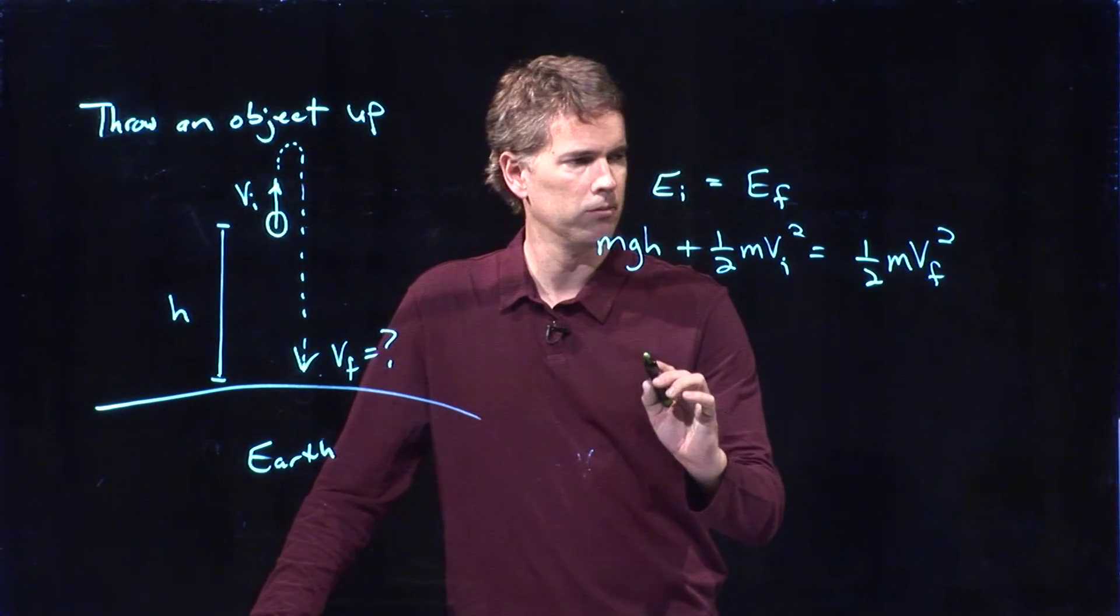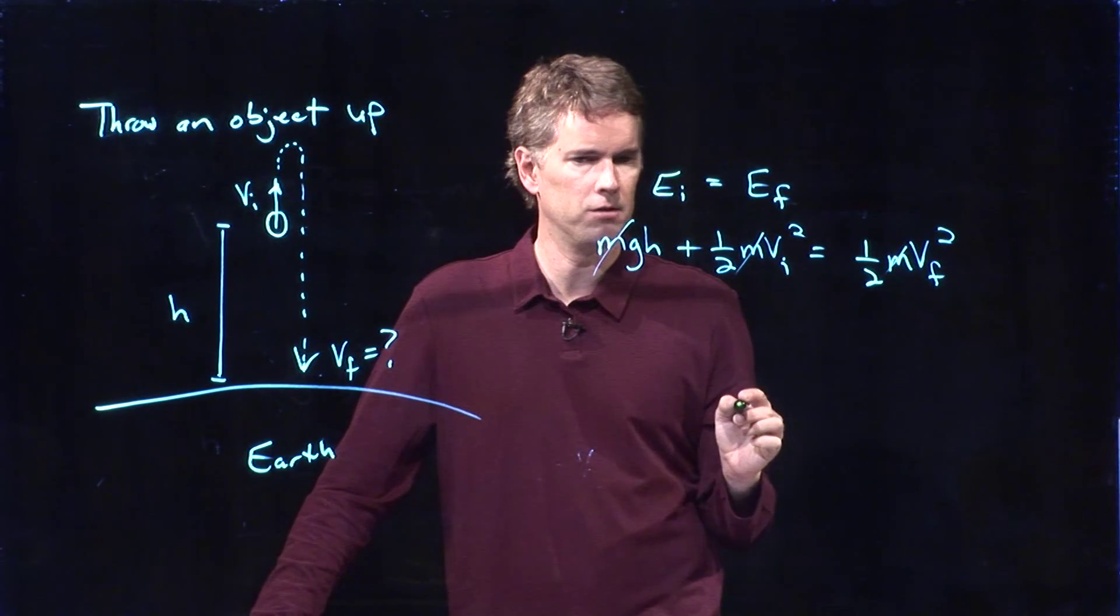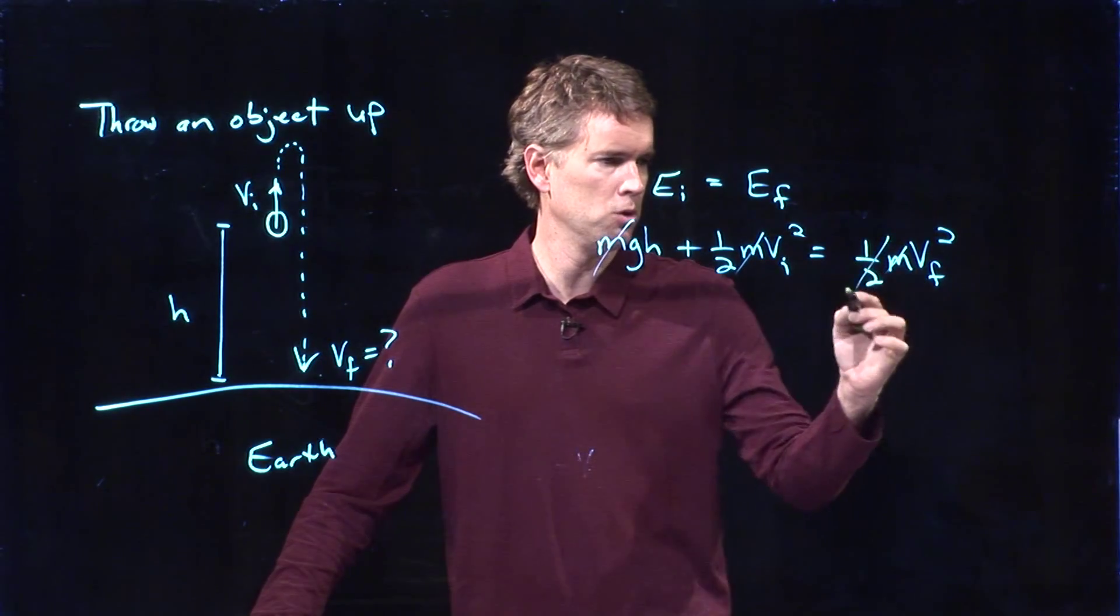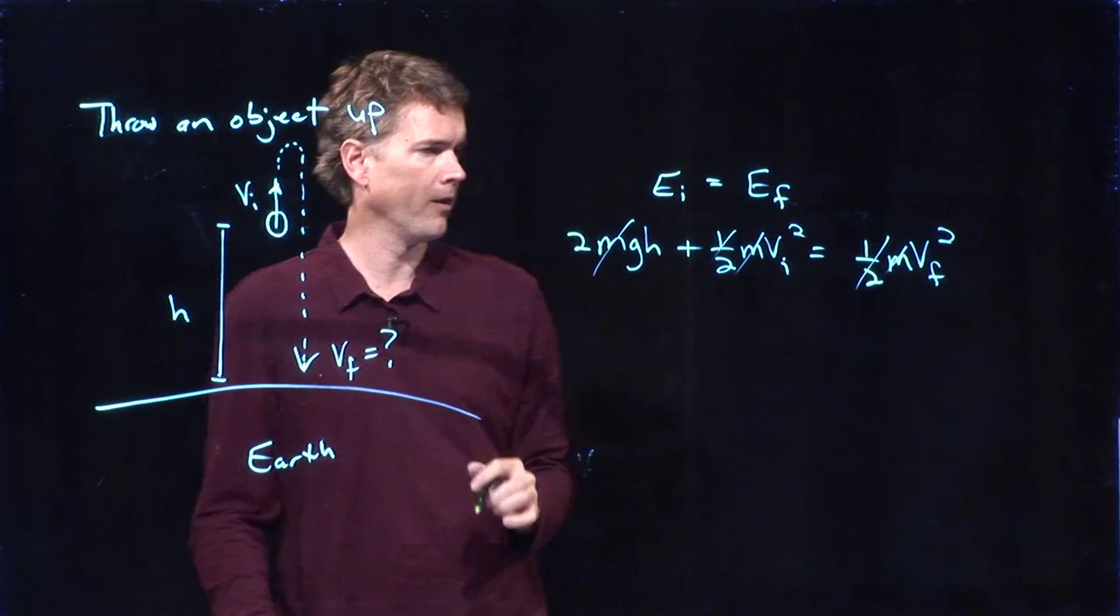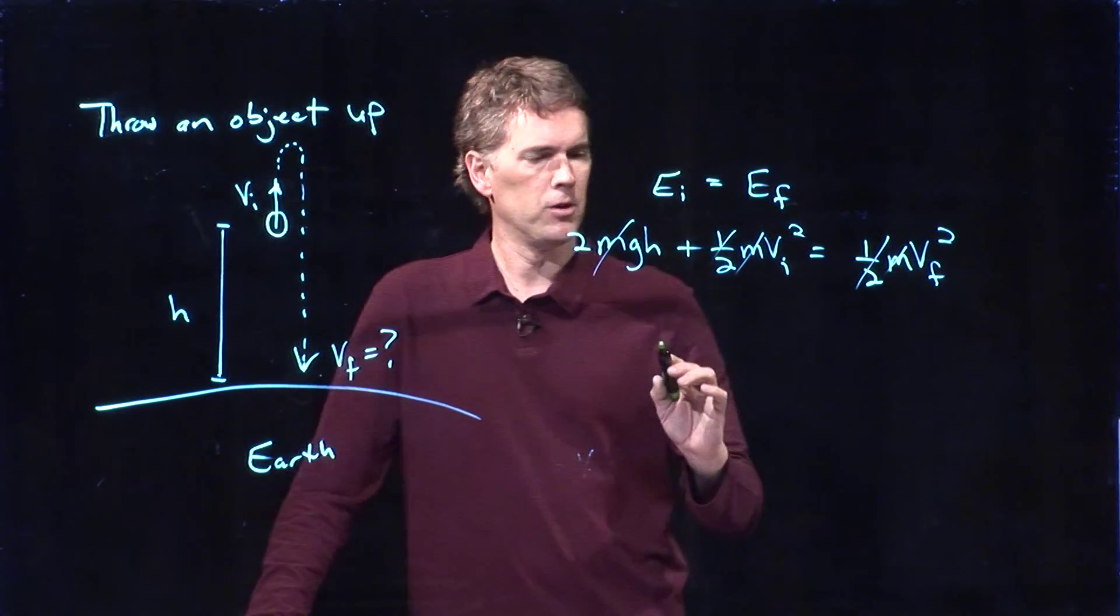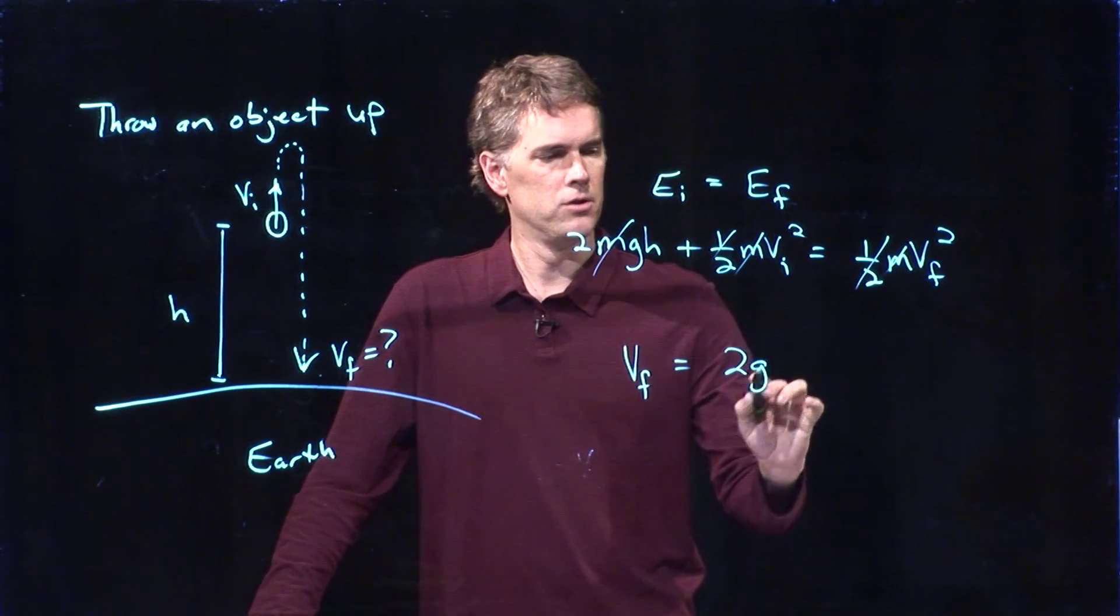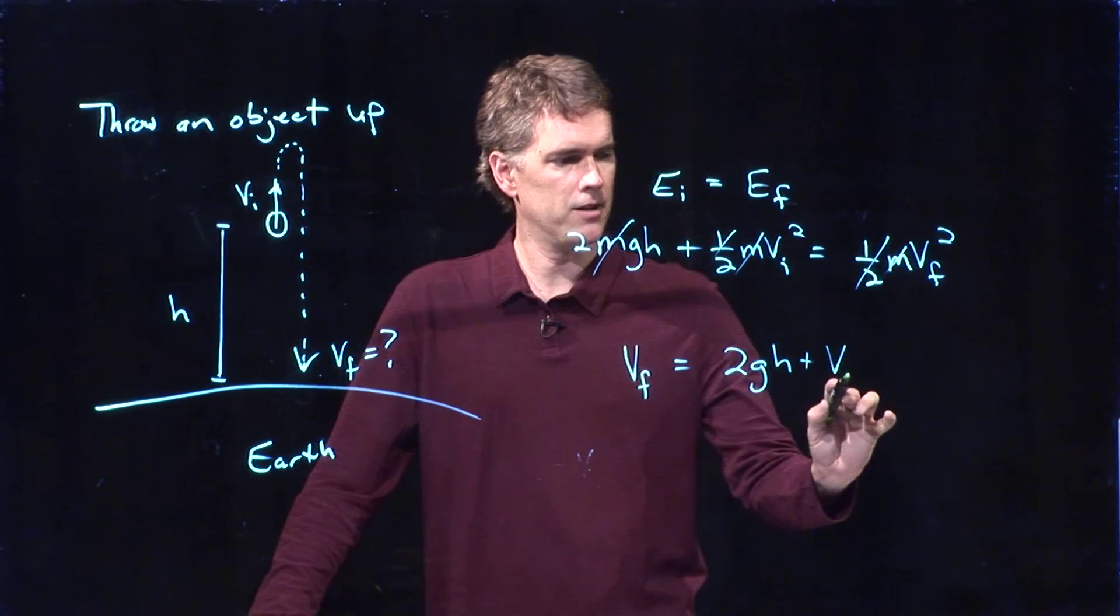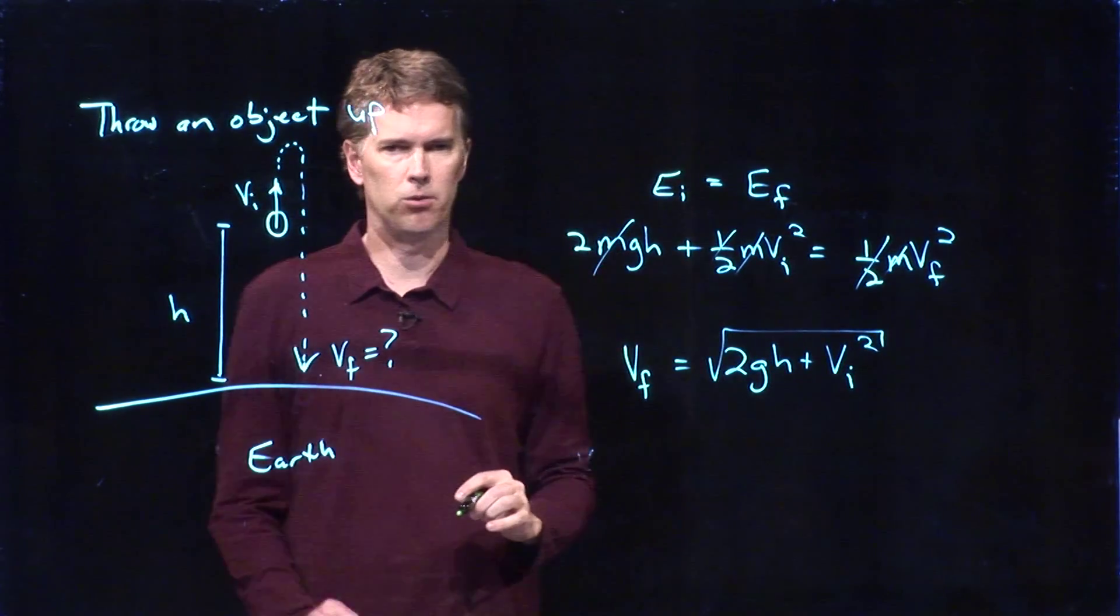Now we can solve this thing for vf. How do we do it? Well, we can cross out the m's on both sides. If I multiply everything by 2, then the 1 halves go away and I put a 2 out in front of that thing. And so we get vf is equal to 2gh plus vi squared, and I'm going to take the square root of that whole thing.